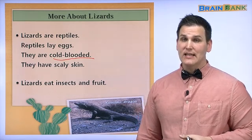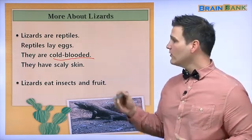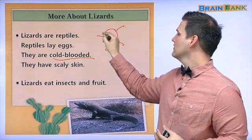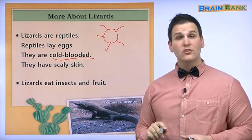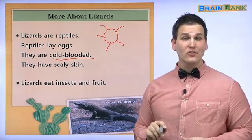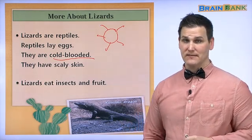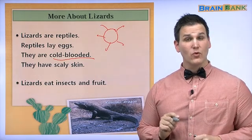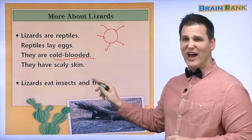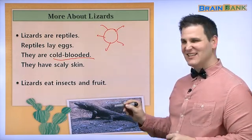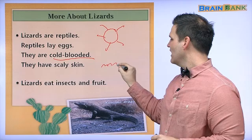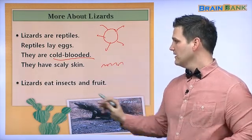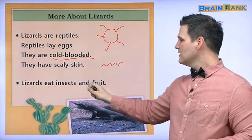This means they need to get heat or warmth from the sun. So, reptiles usually live in very hot, warm, sunny places. You are warm-blooded. They also have scaly skin. Scaly usually means it's kind of rough, not smooth like your skin or my skin.